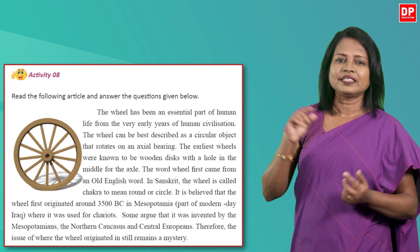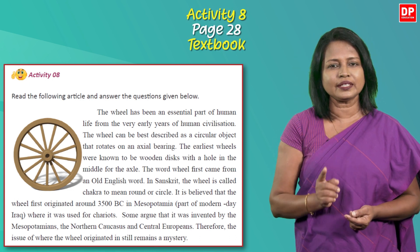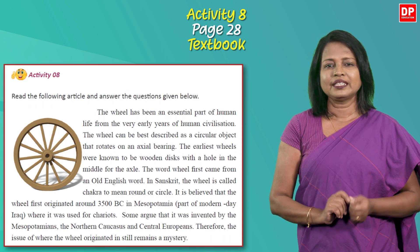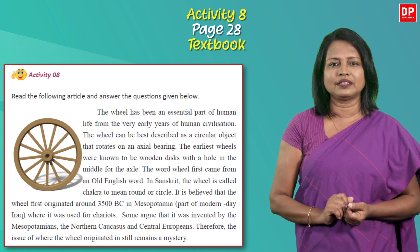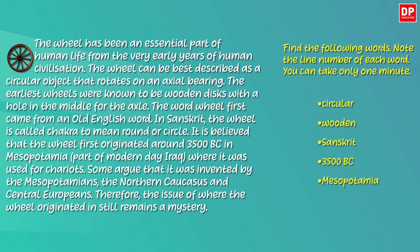Now let's practice finding specific information with a very simple activity. Let's read part of an article and practice this skill. This is a part of an article in activity 8 on page 28 of your textbook. It's an article about the origin of the wheel. You can see a picture of the wheel too. Can you find these words in the article within one minute? You can pause the video, read the article and find the words, but you can take only one minute.